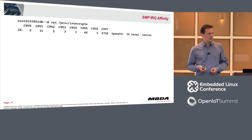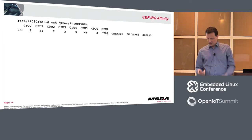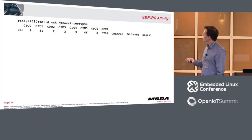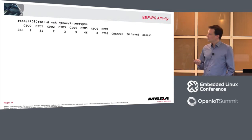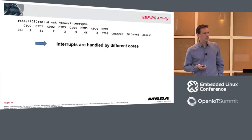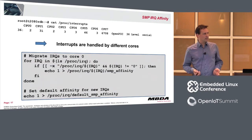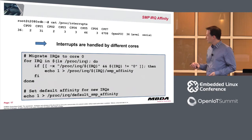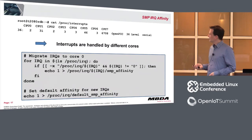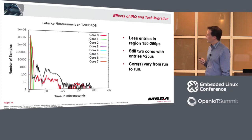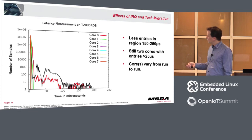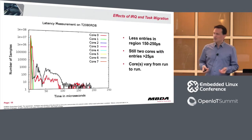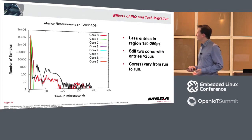Next, look at the interrupts. Do a cat on /proc/interrupts and you get a long list. For the serial interface — interrupt 36 — you can see across all eight cores how often each core handled that interrupt. Interrupts are handled by different cores. The idea: do the same as we did for applications — migrate all IRQ handling to core zero using a bash script, and set the default affinity to core zero for new IRQs. The histogram looks similar but has fewer entries in the higher region. However, there are still two cores involved, changing from run to run.